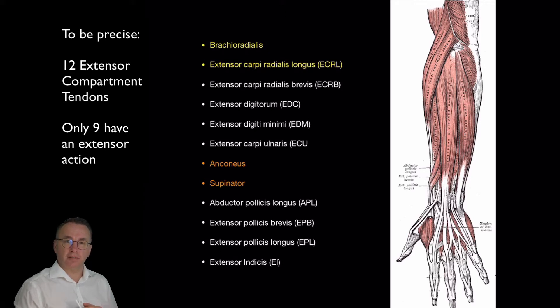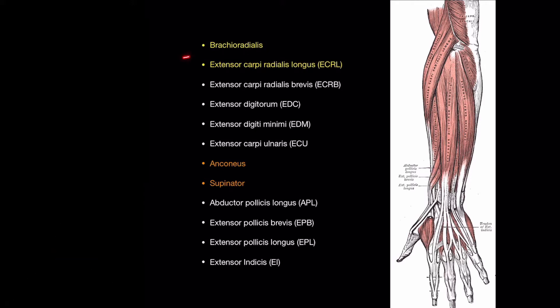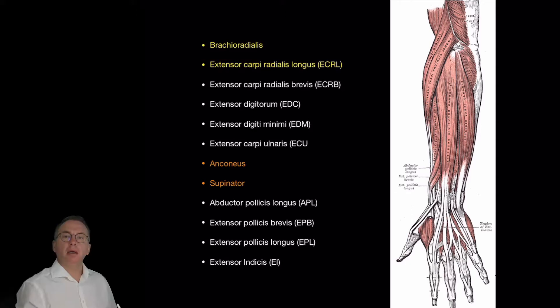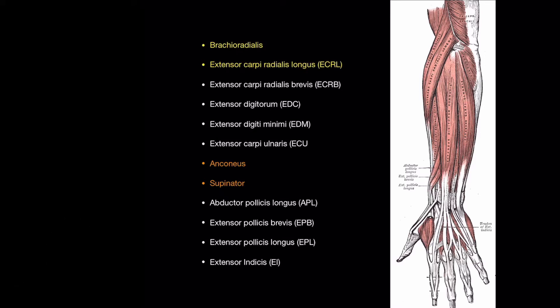One of them is actually a flexor at the elbow. The brachioradialis has a main action of flexing the elbow. It is most powerful when the forearm is slightly pronated and it's able to exert its effort into flexion. The others are extensors with two more exceptions.